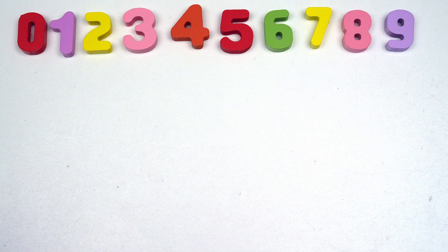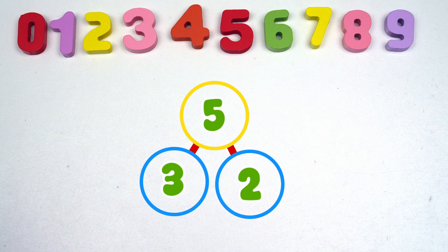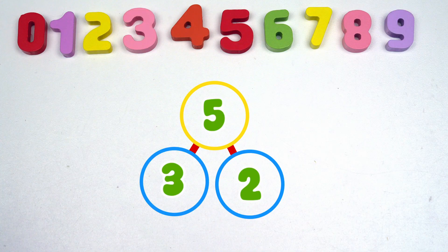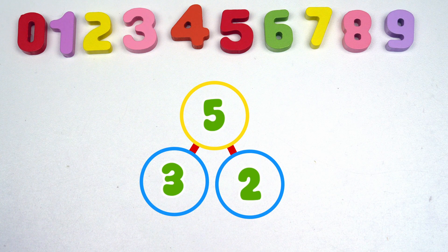We could also draw it like this. See, we have the whole number five at the top and the parts that make up five, three and two are at the bottom.